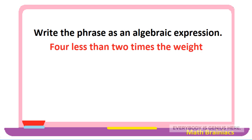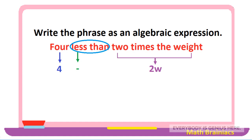Let us work on another example: write the phrase as an algebraic expression — 'four less than two times the rate.' Starting with number four. 'Less' means subtract or minus, so we write the minus symbol. Let us assign w to represent the weight, so two times the weight can be written as 2w. There is a comparison word 'less than,' so we subtract the four from 2w, and it gives us 2w minus four.